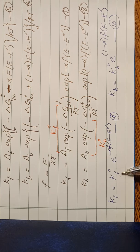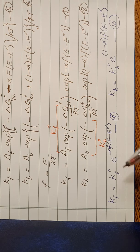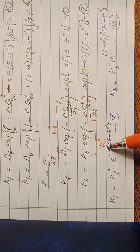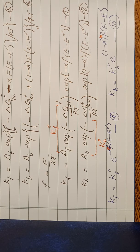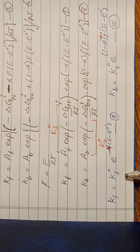These two rate constants have been derived for the one-step, one-electron process. For multiple electron transfer, a factor n corresponding to the number of electrons transferred must be multiplied in. In the next lecture, we will use these rate constants for the case where the interface is at equilibrium with a solution, to find the standard rate constant important for interfacial charge transfer at the electrode-electrolyte interface.